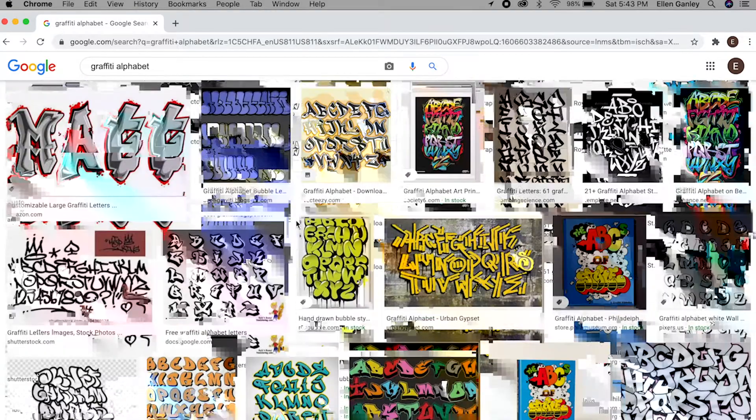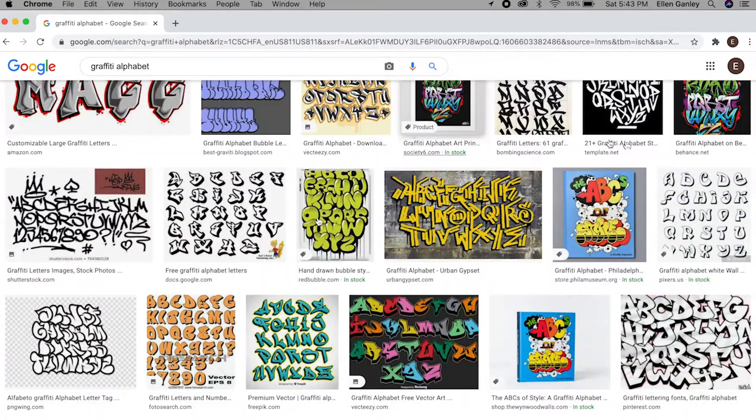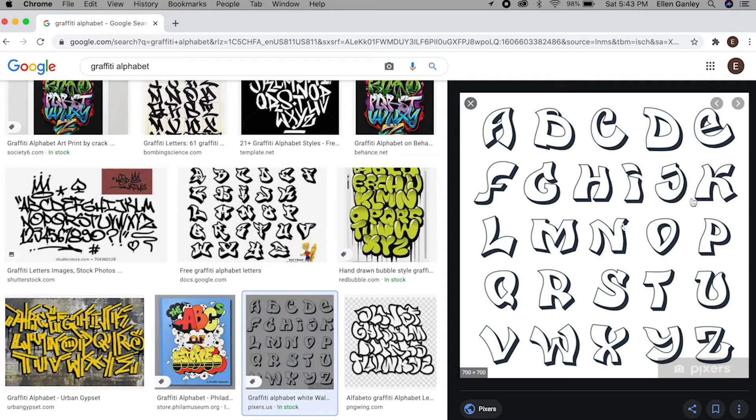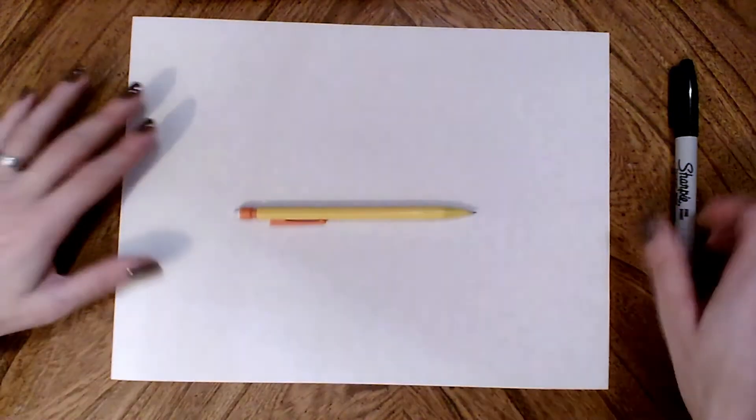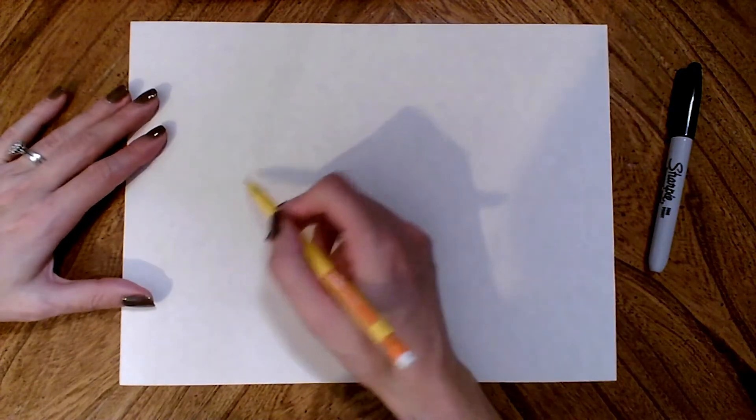You can just scroll through until you find the one that you like the best. I really like how this one looks so this is what I'm going to work off of. Like I said, you want to use your first name and you're going to need a piece of paper, a pencil, and a sharpie or a black marker or any color marker really.